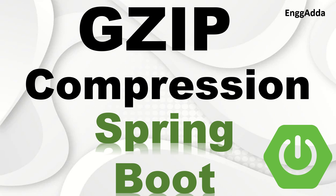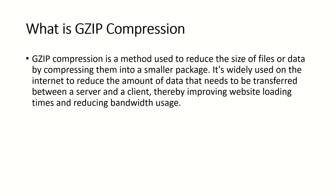So let's get started. What is GZIP compression? GZIP compression is a method used to reduce the size of files or data by compressing them into smaller packages. It is widely used on the internet to reduce the amount of data that needs to be transferred between the server and the client, thereby improving website loading time and reducing bandwidth usage.